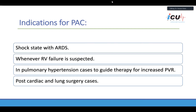Indications for the PA catheter include shock states with ARDS, whenever right ventricular failure is suspected, in pulmonary hypertension cases to guide therapy for increased pulmonary vascular resistance. Nowadays it's mainly used in post-cardiac and lung surgery, mainly lung transplant surgery.